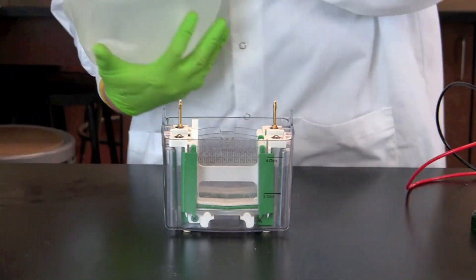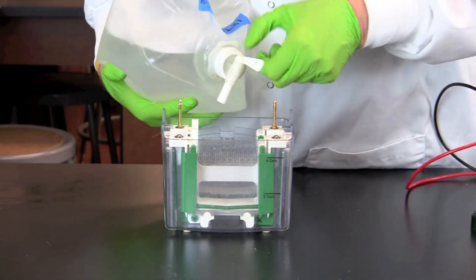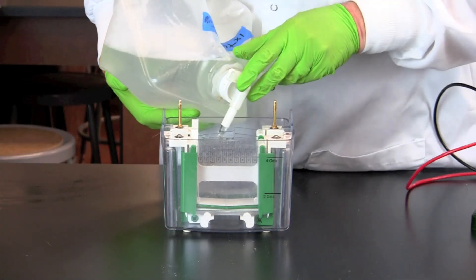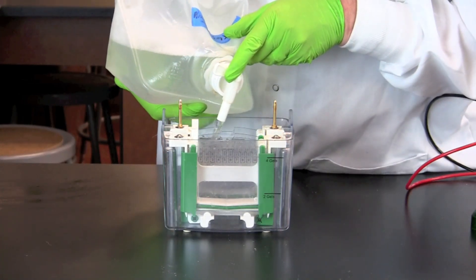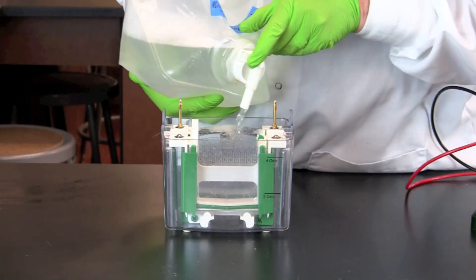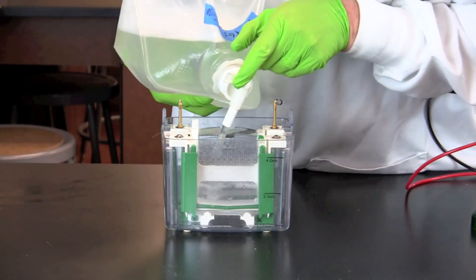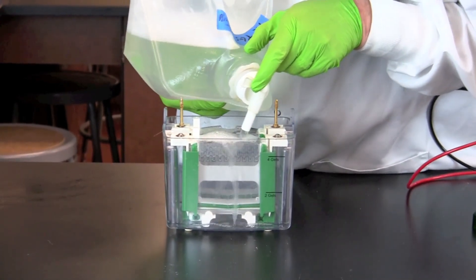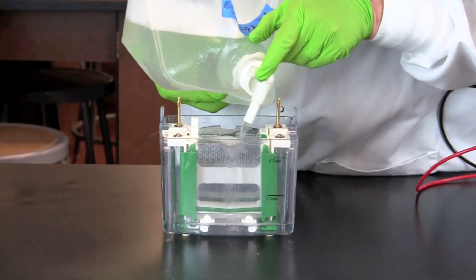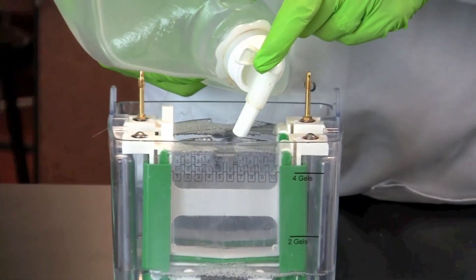Fill the chamber of the electrode assembly with 1X TGS electrophoresis buffer so the short plates of the gel are covered. Add buffer to the outer tank up to the four gels line.